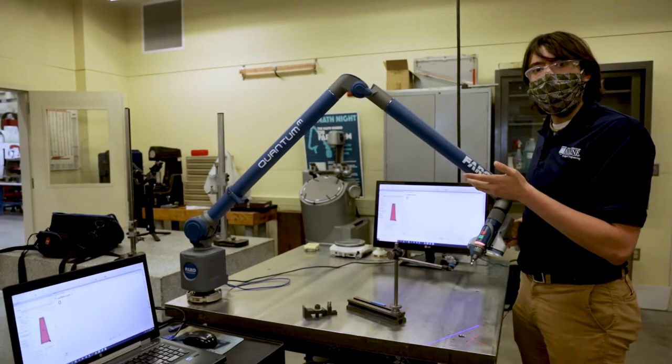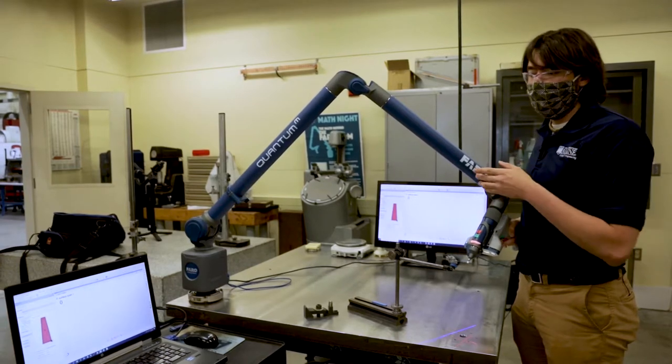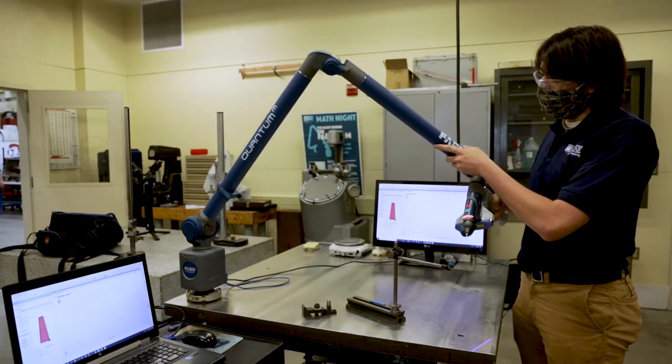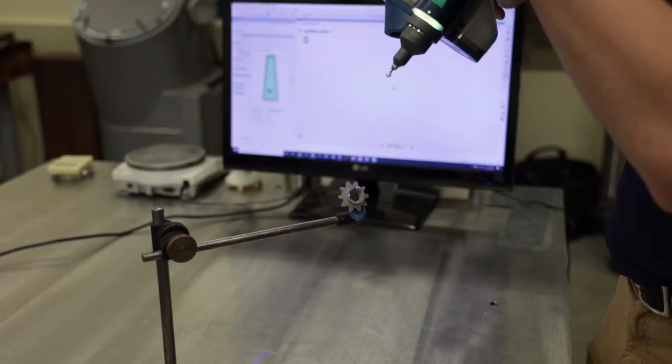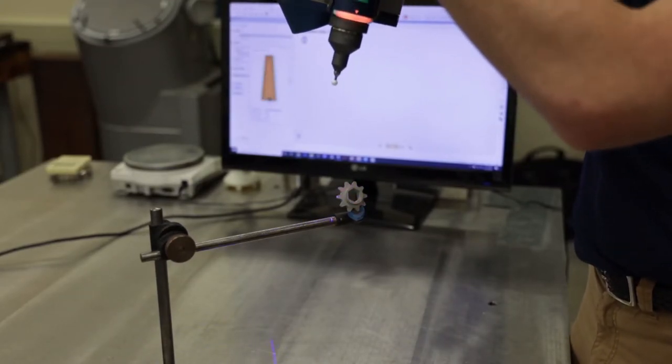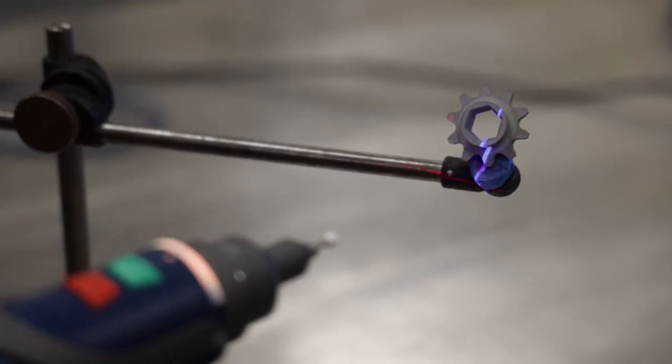Once the part is printed and fully processed, we can take it and use our Faro arm to scan the part. And that scan data can be compared to the original CAD model that was used to make the part.